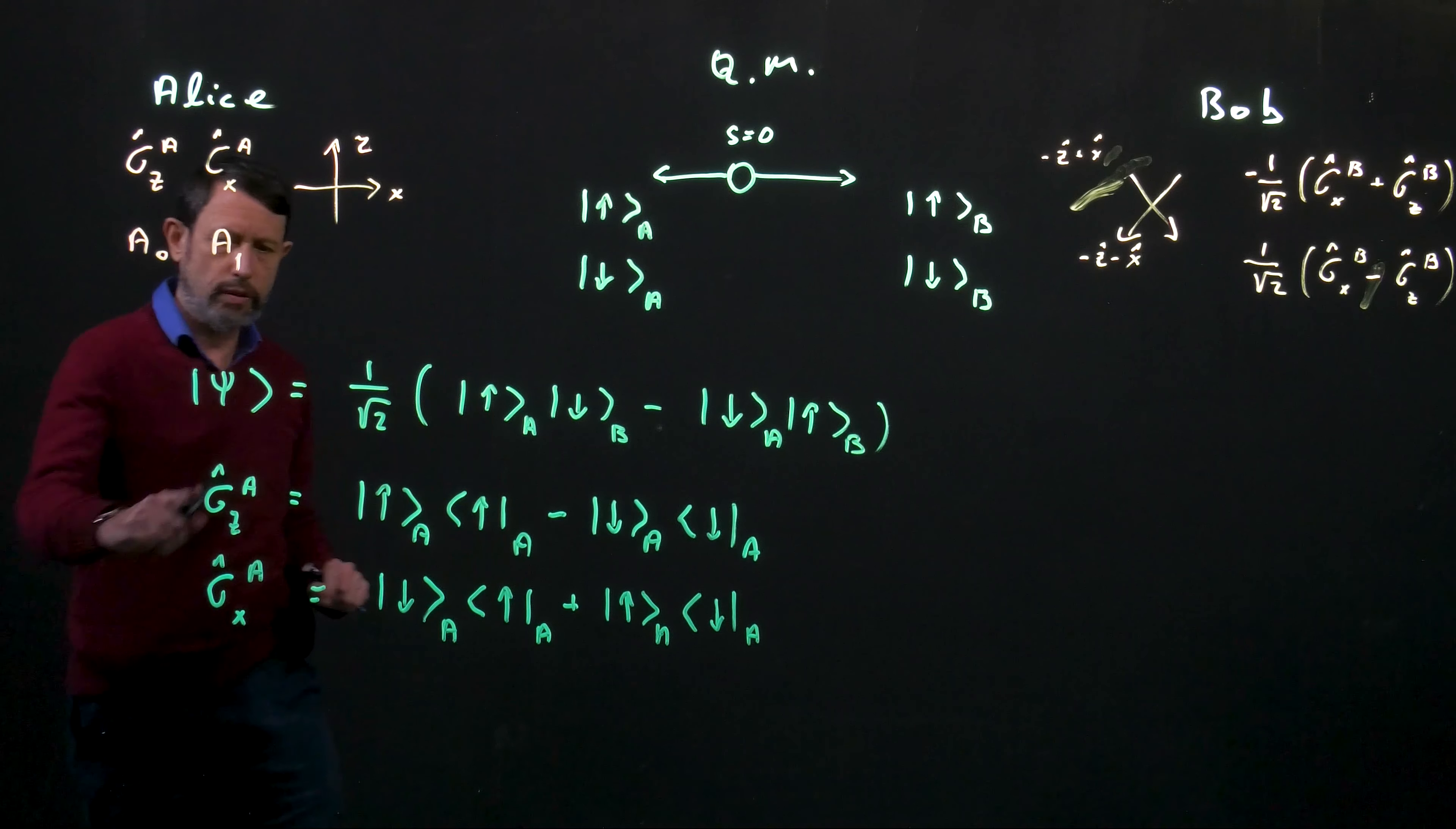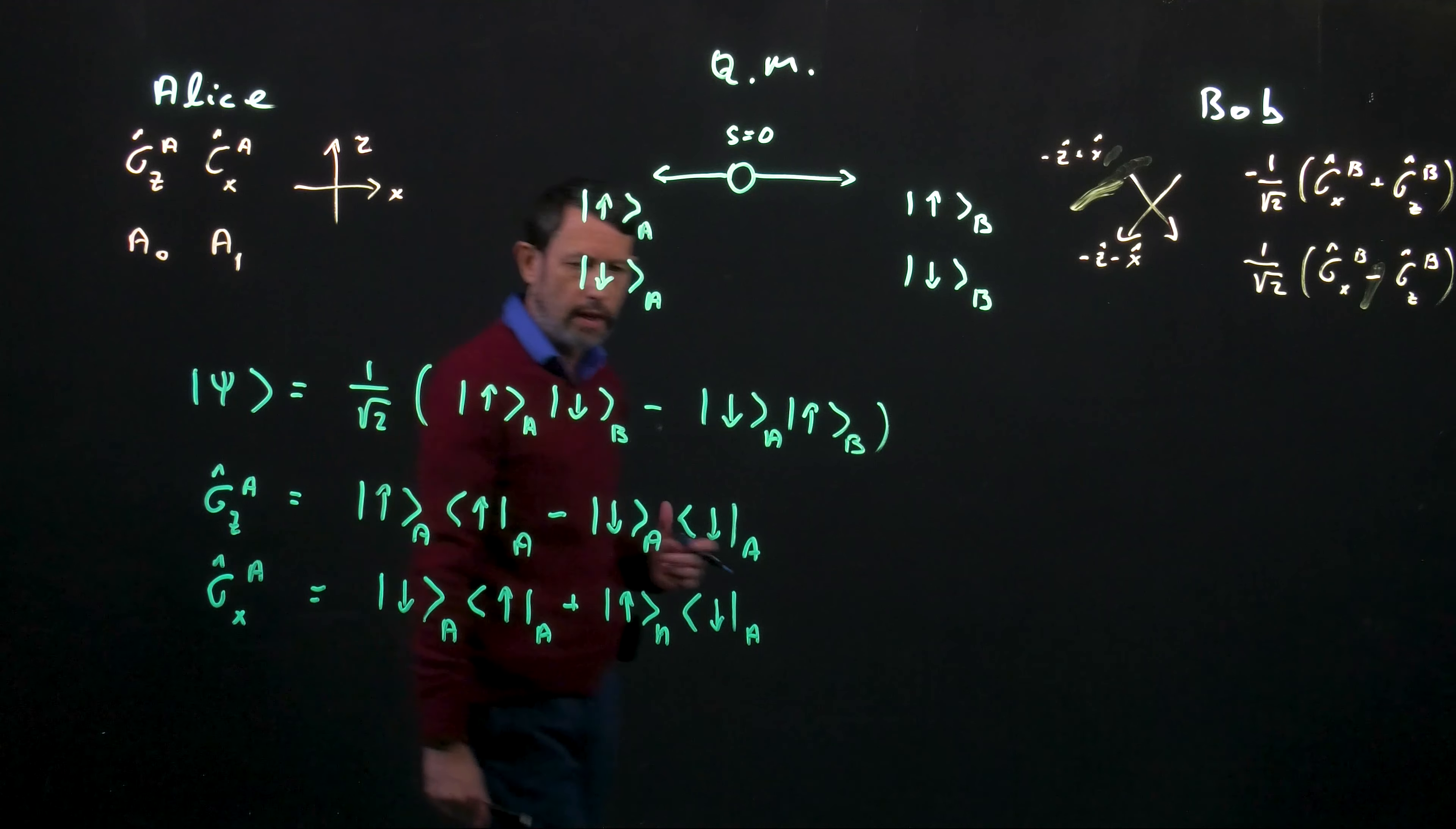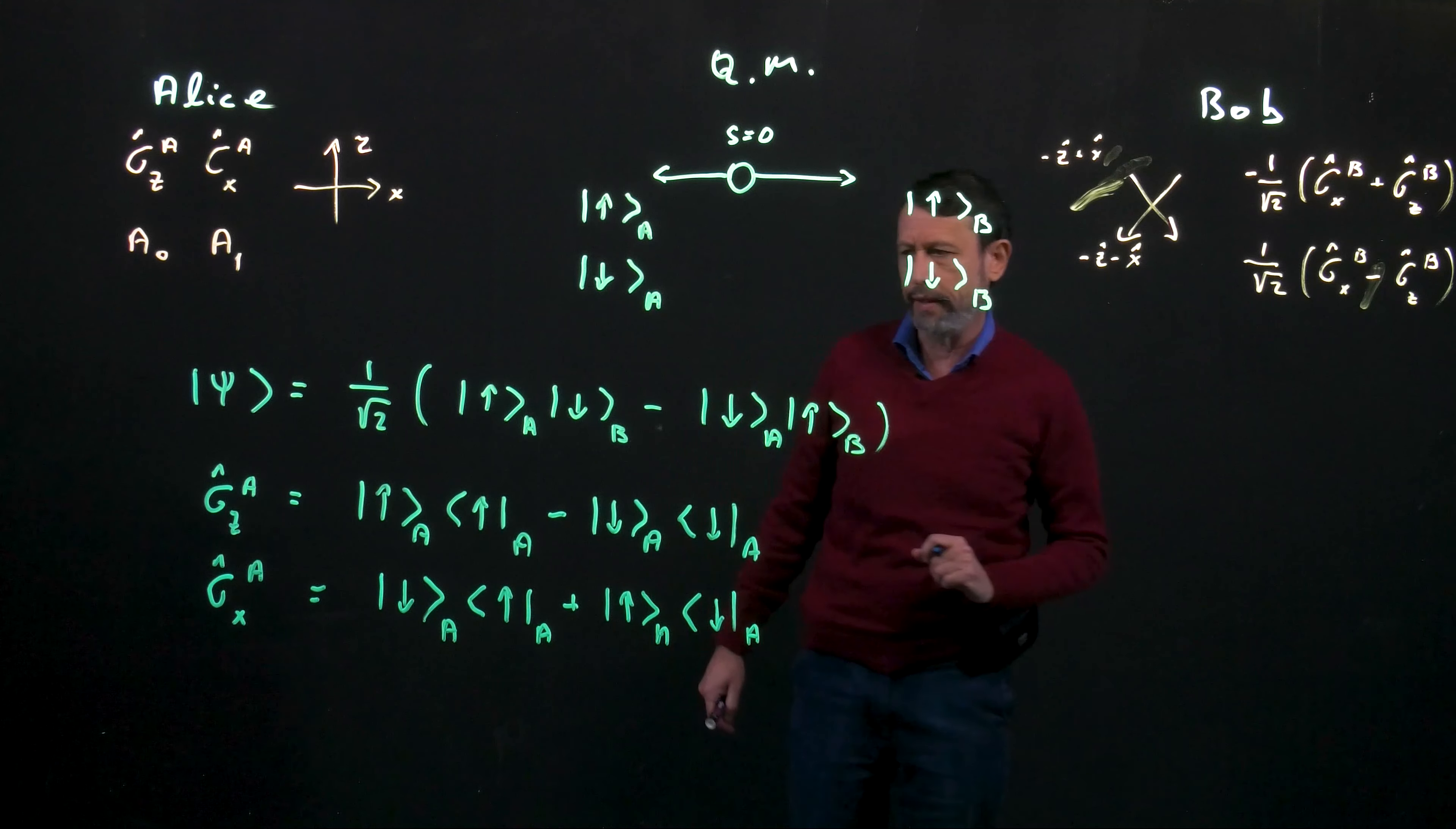The operator in the z-direction, if we start with a wave function in the z-direction, we get the same wave function. If we start with a down wave function, we end up with minus this wave function.